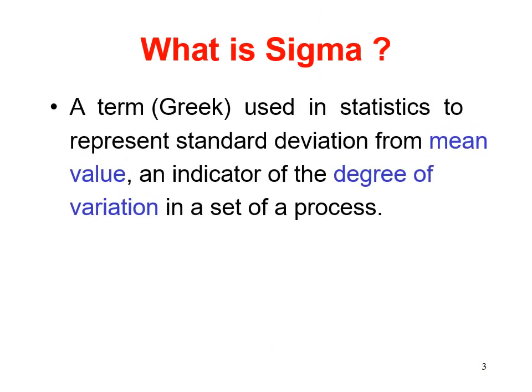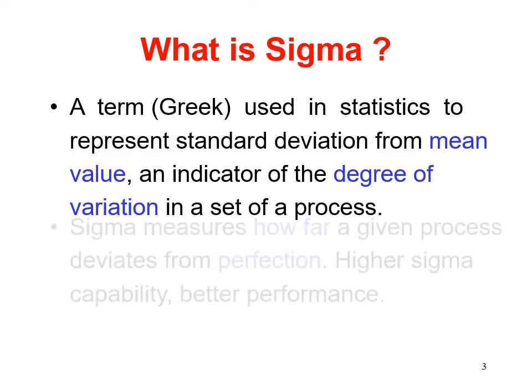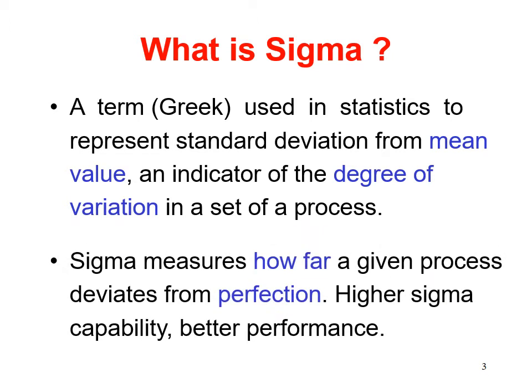What is Sigma? Sigma is a Greek term used in statistics to represent standard deviation from a mean value — an indicator of the degree of variation in a set of processes. Sigma measures how far a given process deviates from perfection. Higher Sigma capability means better performance.